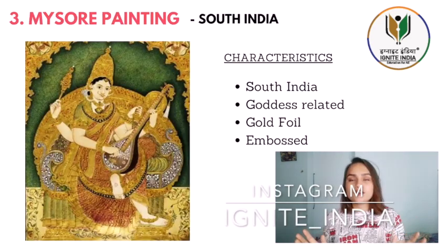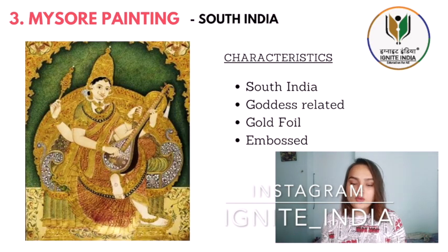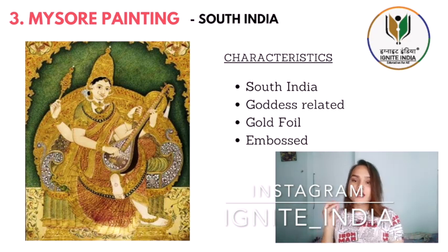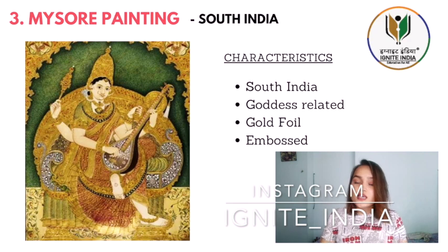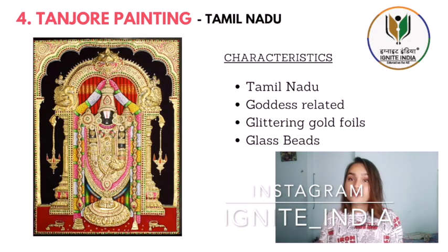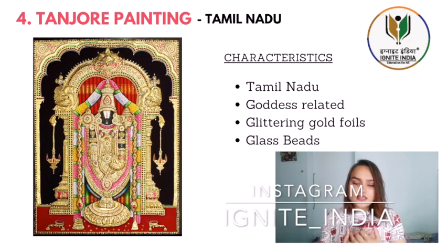Our third art form is the Mysore painting, which is from South India. It has goddesses in it and it has gold foil — it is embossed.